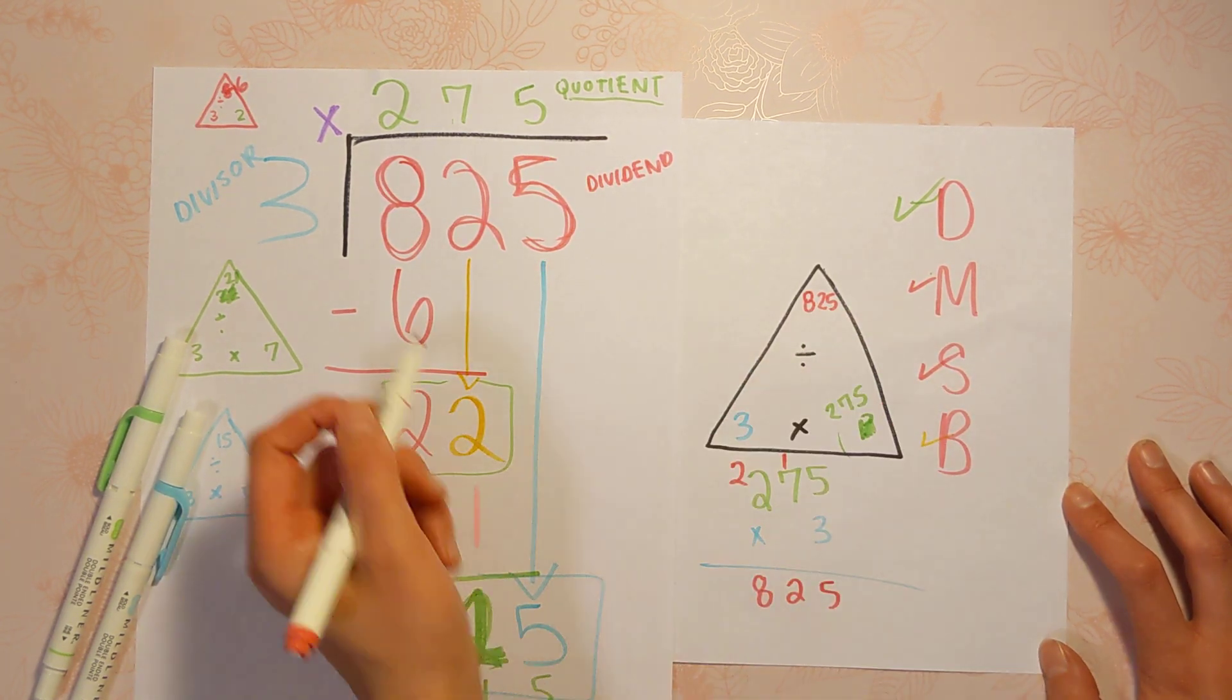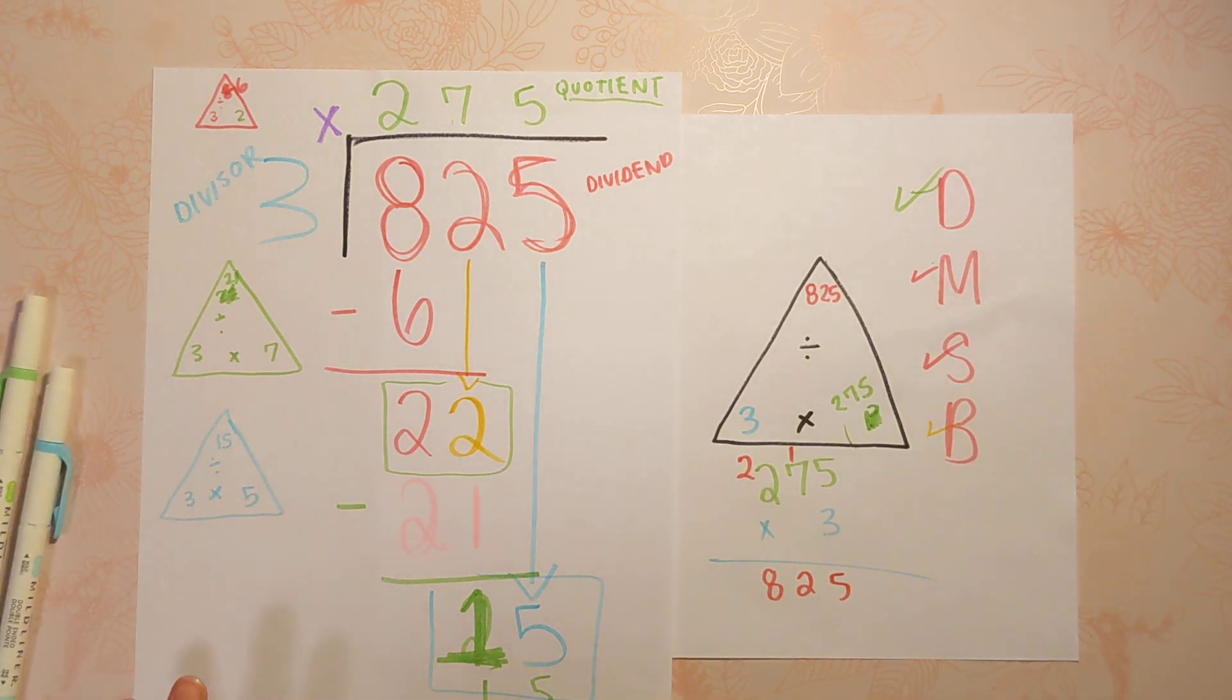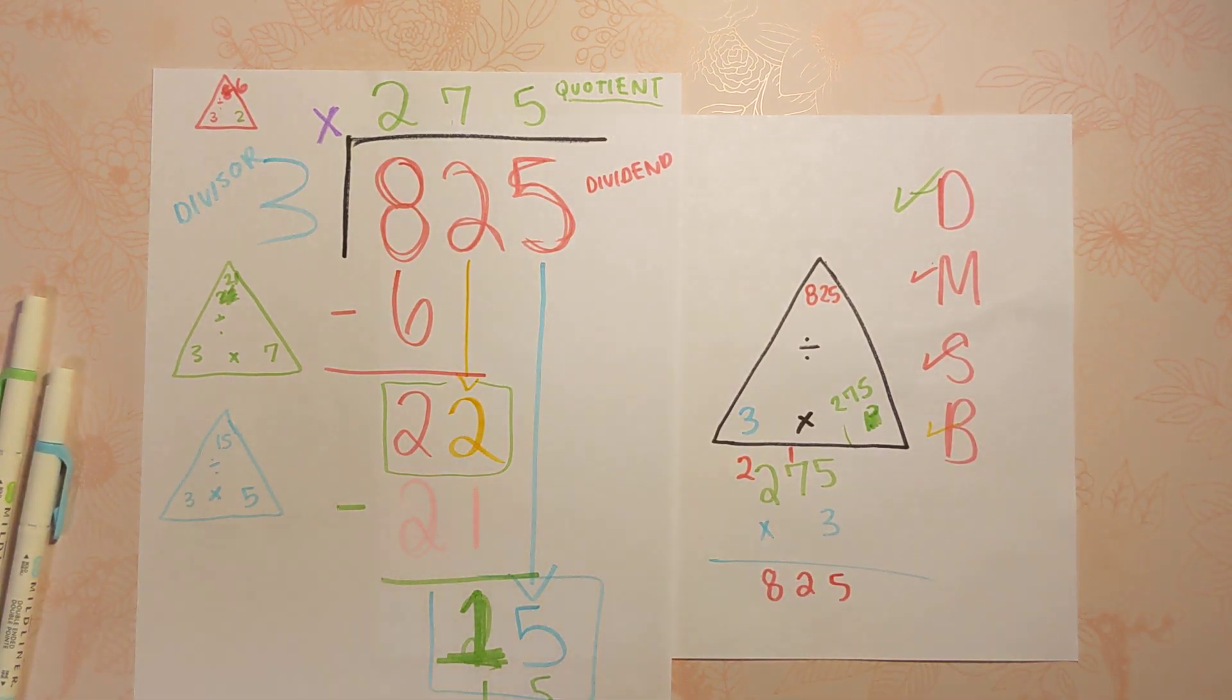825. 3 times 275 is 825. 825 divided by 3 is 275. That's how you do the standard algorithm for division and then check it afterwards with multiplication.